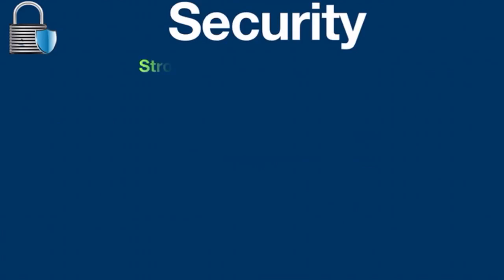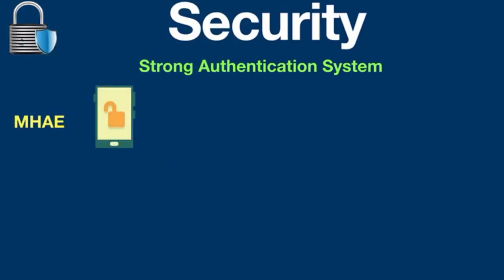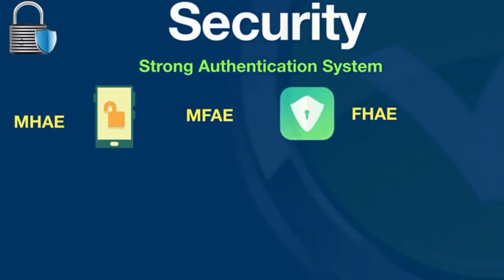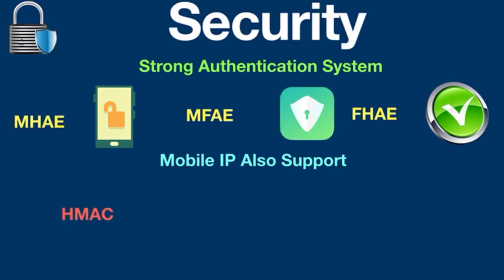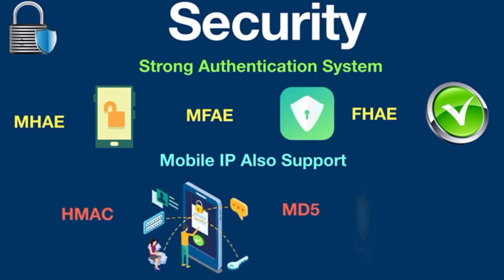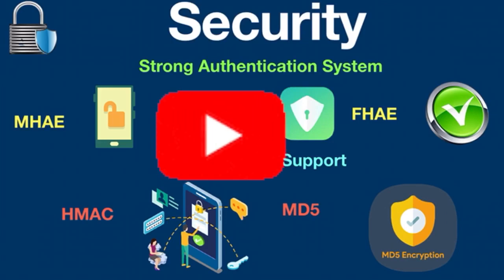Regarding security in Mobile IP, it uses a strong authentication system. Services include Mobile-Home Authentication Extension, Mobile-Foreign Authentication Extension, and Foreign-Home Authentication Extension. Mobile IP also supports Hash-Based Message Authentication Code (HMAC) and the Message Digest Algorithm MD5. That wraps up today's video — thanks for watching, please subscribe, and see you in the next video.